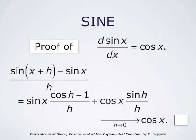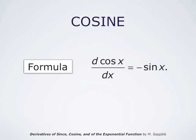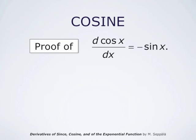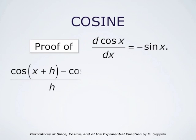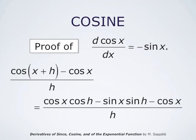This means the derivative of the sine function is the cosine function. The derivative of cosine is negative of sine. We prove this by a similar computation starting with the difference quotient for the cosine function: cosine at x plus h minus cosine at x, divided by h. Using the addition formula for cosine, we write the numerator as cos x cos h minus sin x sin h minus cos x.